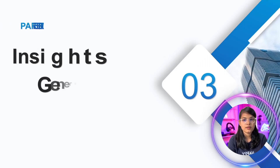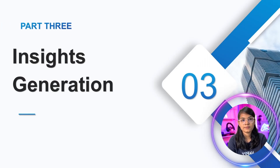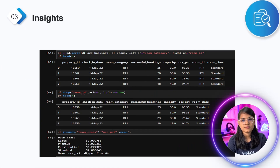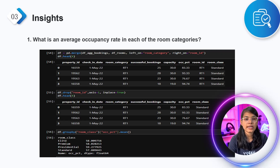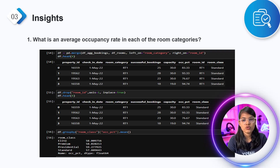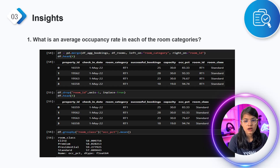Now the third part is insight generation, which is a very important part. The first question: what is the average occupancy rate in each room category? Here I used a merge function where I merged two columns on the basis of room category and room ID. After that, we drop the duplicate room ID column, and using the groupby function followed by room class, we get the occupancy percentage.